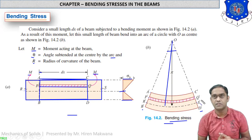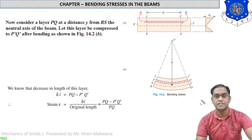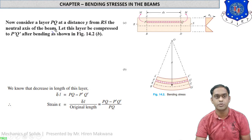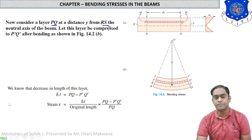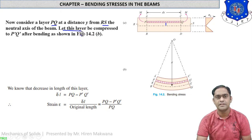Now let us consider the theory of derivation and what happens with the equation. Consider layer PQ at a distance Y — a vertical distance Y from the neutral axis RS. Now let this layer be compressed to P'Q' after bending.